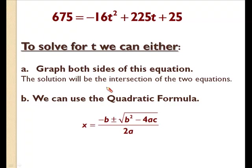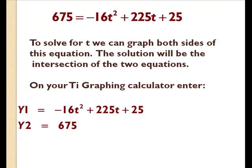I think I'm going to start with the graphical solution. So on your TI graphing calculator, we're going to enter the left and right hand side of this equation. My Y1 will be -16t² + 225t + 25, and my Y2 will be 675.